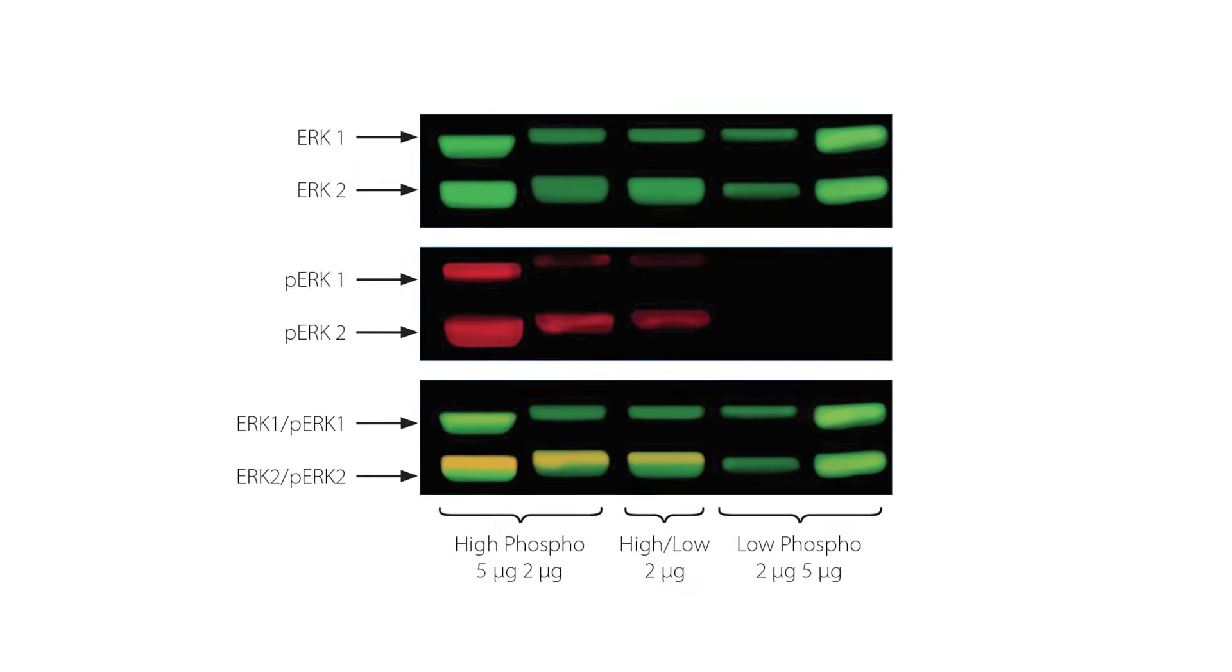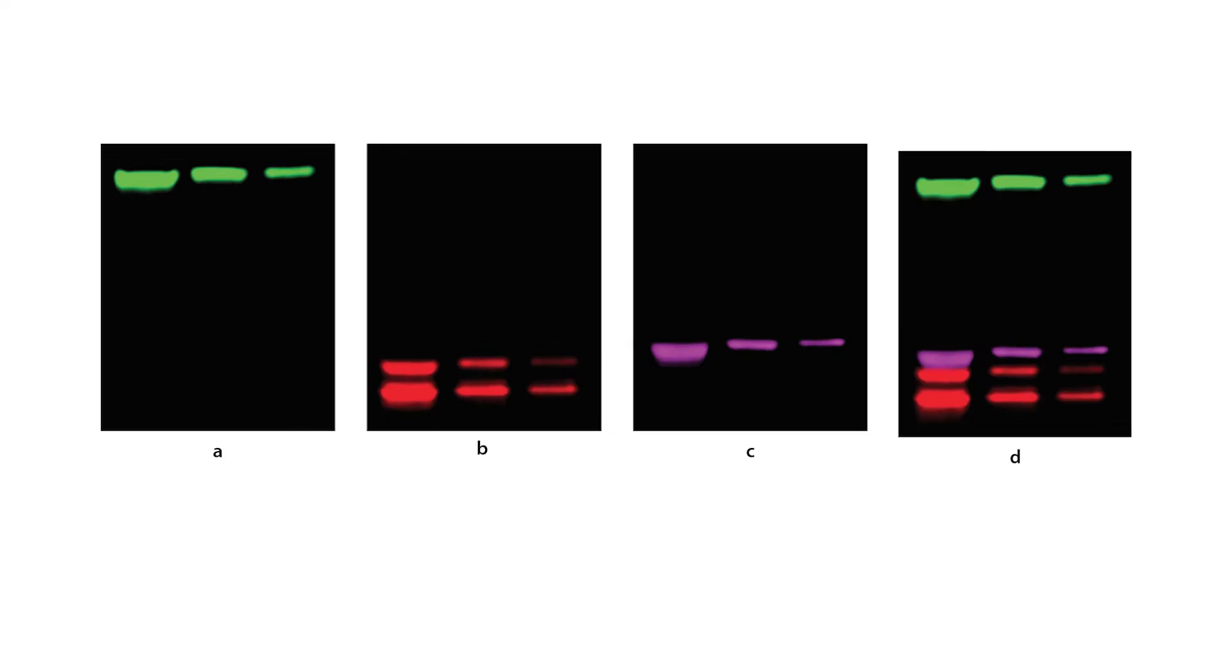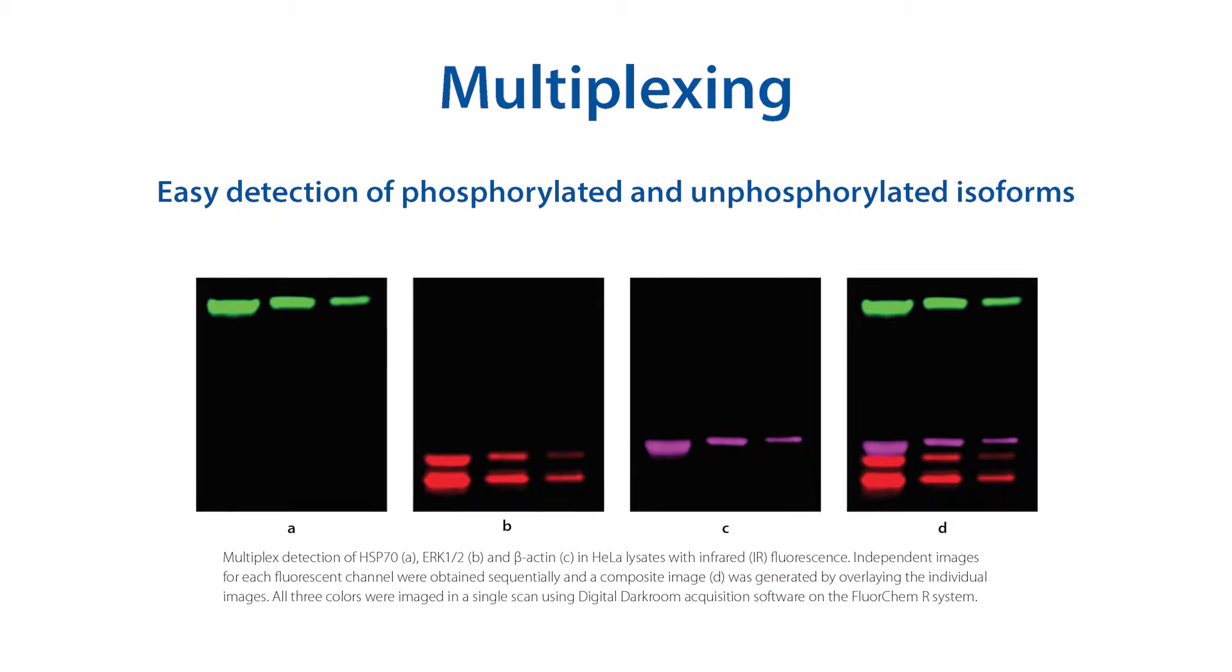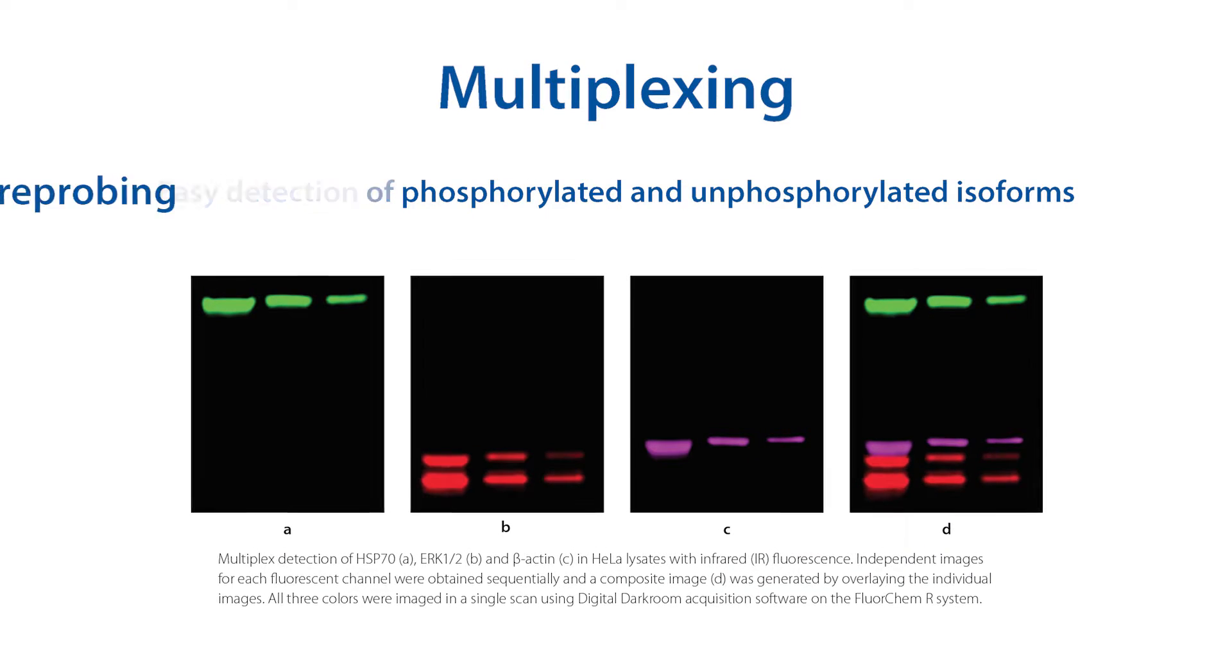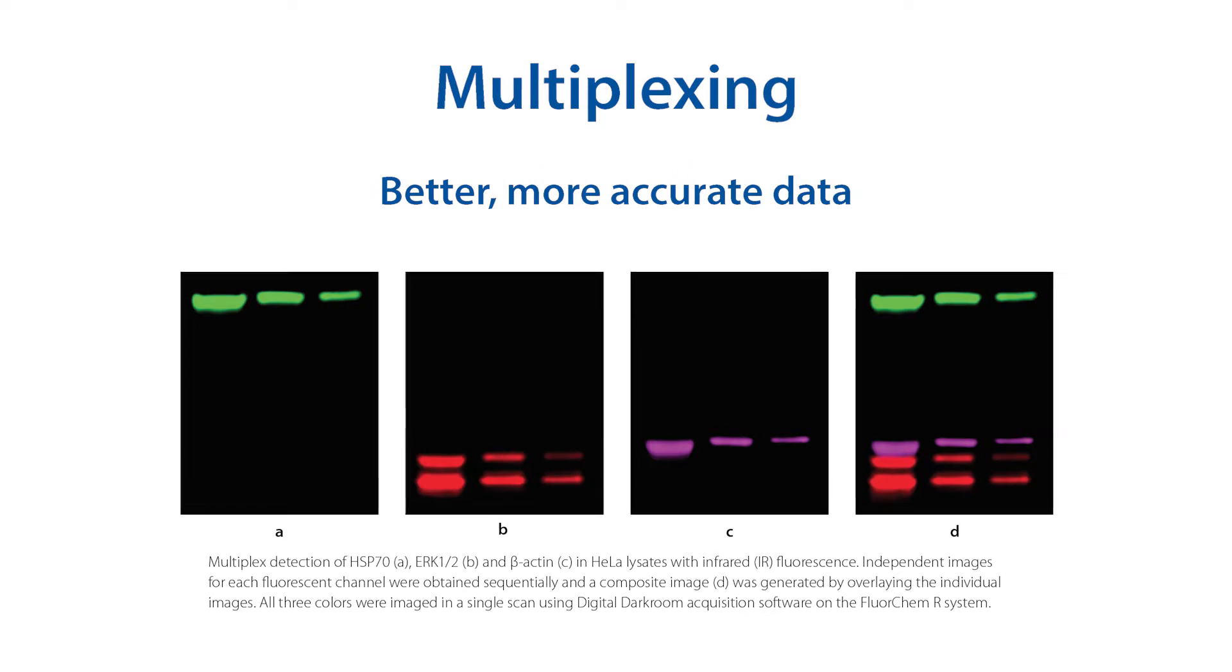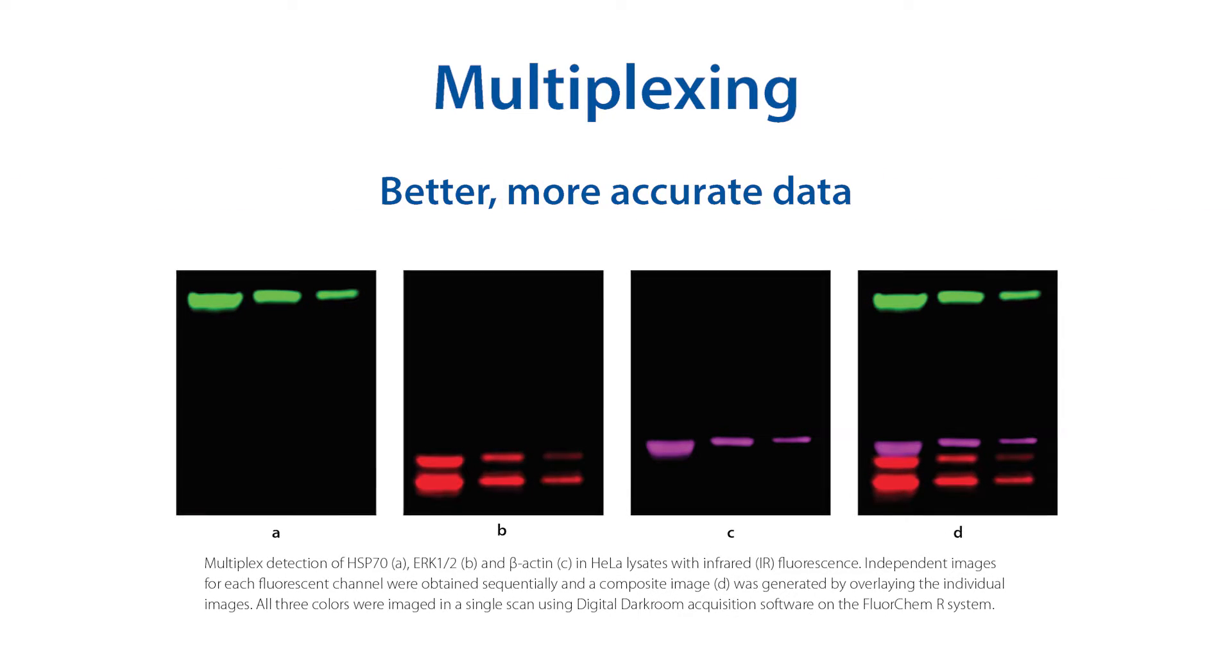Fluorescent multiplexing allows you to easily detect multiple proteins and phosphorylated and unphosphorylated isoforms in a single blot, while eliminating the need to strip and re-probe, getting you better, more accurate data in the process.